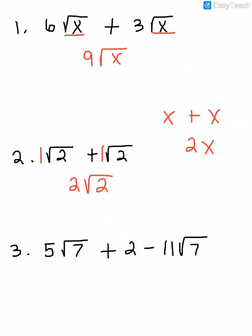In number three, we have three terms: 5 square root of 7 plus 2 minus 11 square root of 7. These two radical terms are like terms, so we can combine those. The 2 doesn't have a like term. I'm going to bring down the 2 and then combine my radicals — 5 square root of 7 minus 11 square root of 7 gives me negative 6 square root of 7.